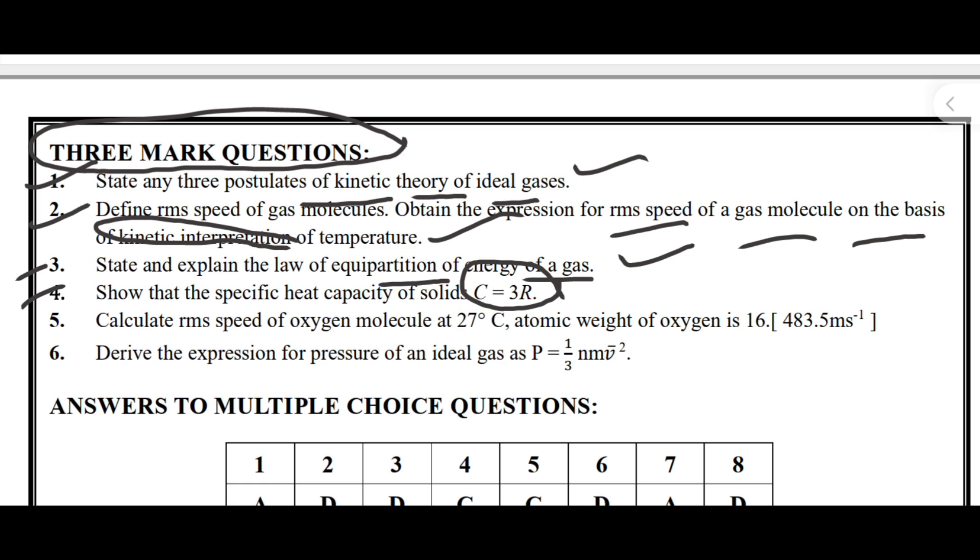This is a problem-type question: Calculate RMS speed of oxygen molecule at 27 degrees Celsius; atomic weight of oxygen is 16. Next, derive the expression for pressure of an ideal gas P = 1/3 nm v²—this is also an important derivation. If you practice these questions completely, you will easily get good marks in your annual theory exam that will boost your marks.